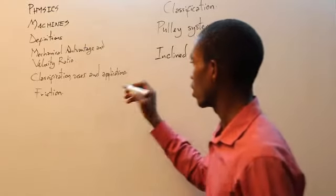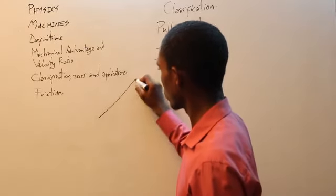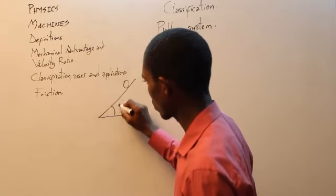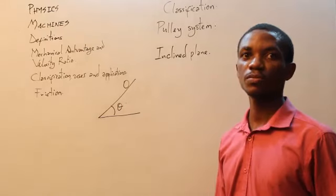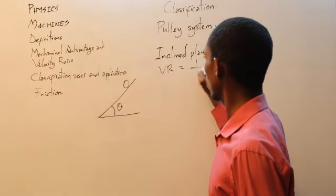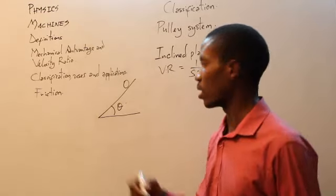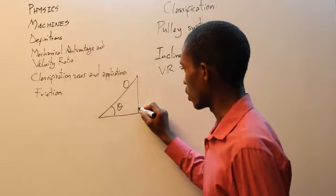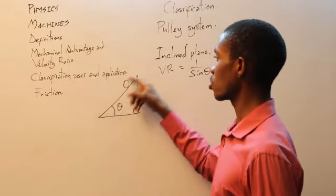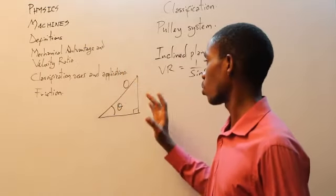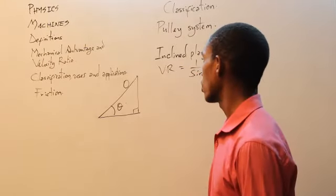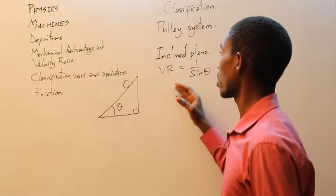In the inclined plane, which has a triangular shape, the velocity ratio is calculated as 1 over sin theta. Think of a complete triangle: 90 degrees, the ground, and the height. You roll the load up the inclined plane across the slope. This is the distance through which the load goes to get it up to the top. Your effort goes all across the slope — you roll the load up the entire incline — but you don't have to input as much force as you would if you were to lift it directly.